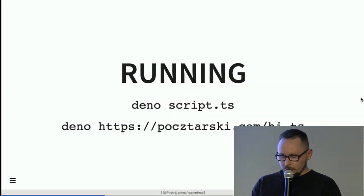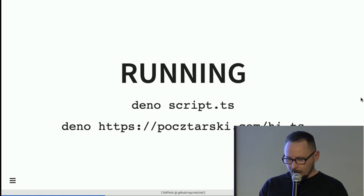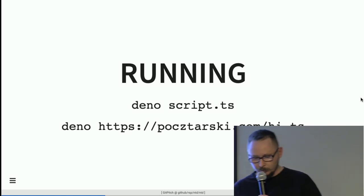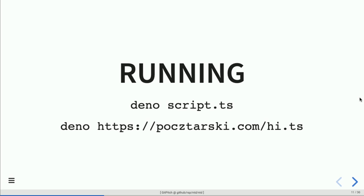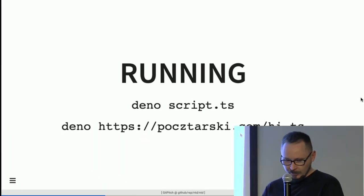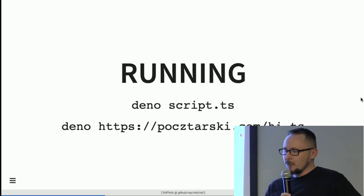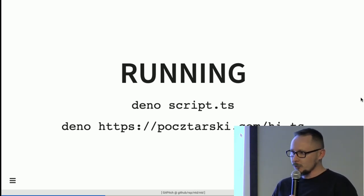The main URL is deno.land, and here is the URL for the releases for anyone who would like to try it. How do you run programs with Deno? You can either run a file name — 'deno' and the filename — but you can also run a URL directly from the internet. You don't even need to download the program you are running.